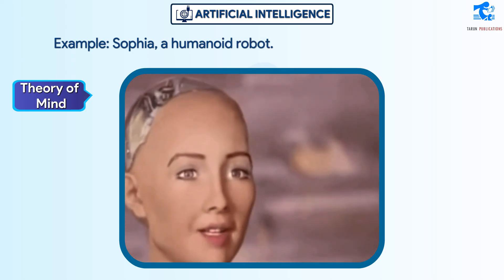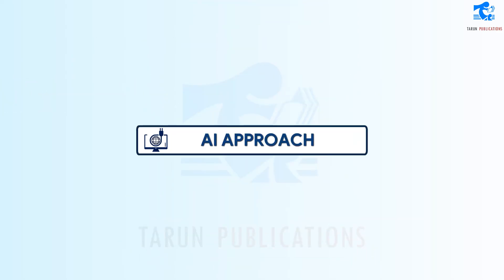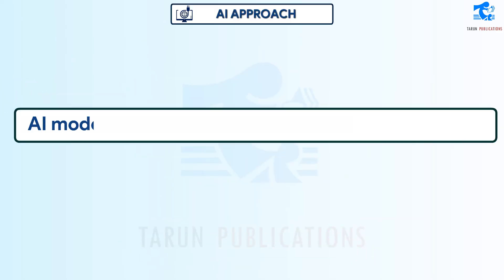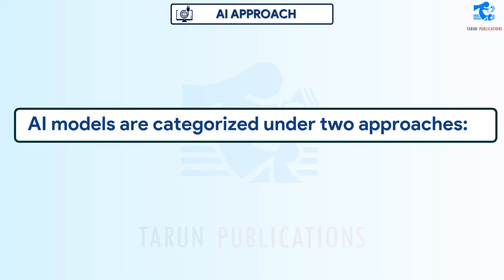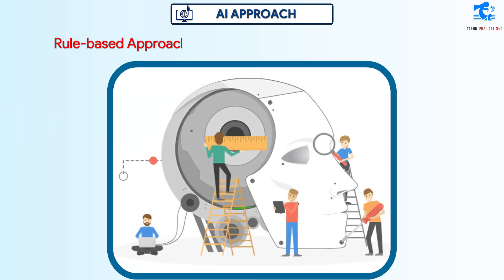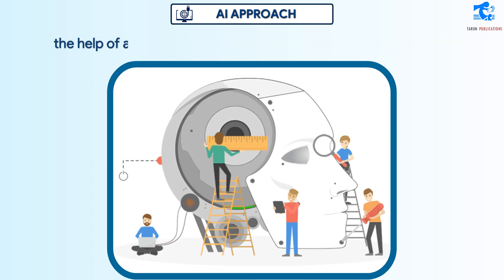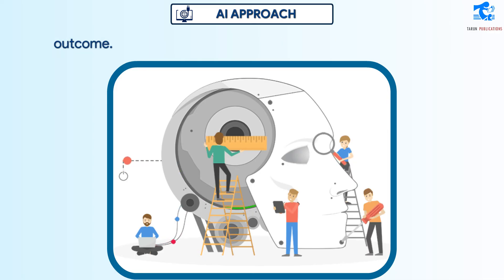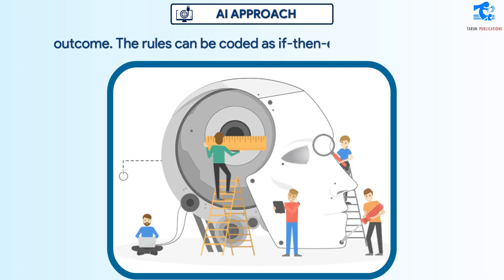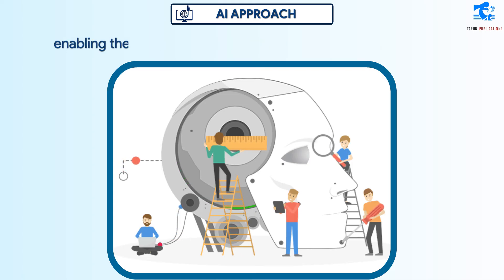AI models are categorized under two approaches. In the Rule-based Approach, AI is achieved only with the help of a set of predefined rules that result in a predefined outcome. The rules can be coded as if-then-else statements, enabling the computer to make decisions.